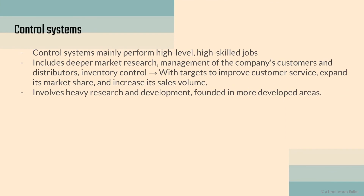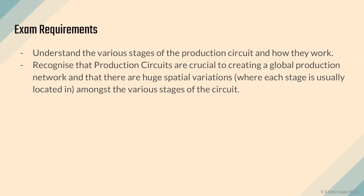Control systems are an extra part of the production circuit and mainly perform high-level, high-skilled jobs. This includes deeper market research, management of companies, customer management, and inventory control. It targets improving customer service, expanding market share, and increasing sales volume — moving into the realm of research and development. Control systems are usually found in more developed areas and handle the behind-the-scenes work: who produces the advertisements, who does the research to ensure the product works.